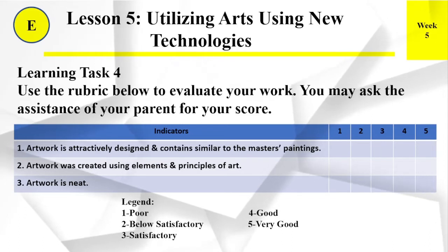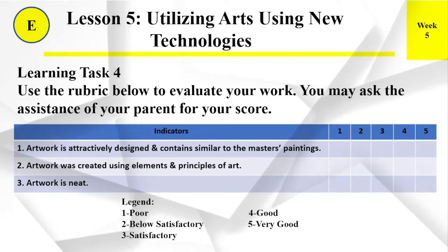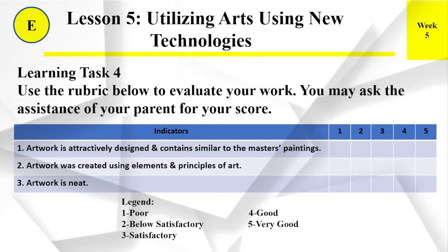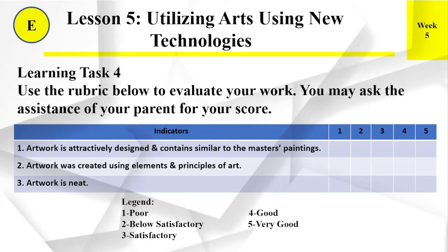Number 3: Artwork is neat. The scoring scale is as follows — 1 is poor, 2 is below satisfactory, 3 is satisfactory, 4 is good, and 5 is very good.